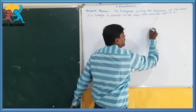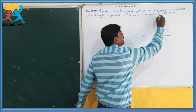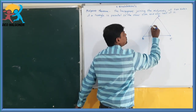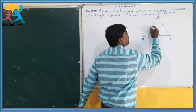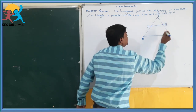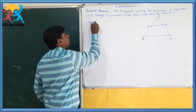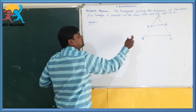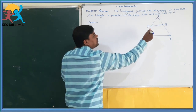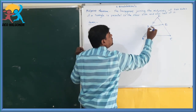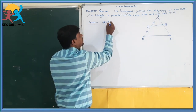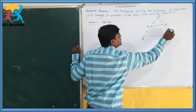We will draw a triangle and name it as ABC. We have to take the midpoints and join them. The midpoints are D and E. In the given, D is the midpoint of AB and E is the midpoint of AC. That means AD is equal to DB, and AE is equal to EC.